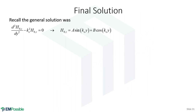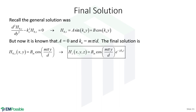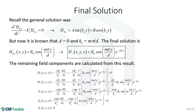The final TE solution for H₀Z is B·sin(KC·y)·e^(−jβz), where B is the amplitude of the Mth mode. This is substituted back into the field-component equations to find all other field components. The full set of TE field expressions for the parallel plate waveguide is then complete.